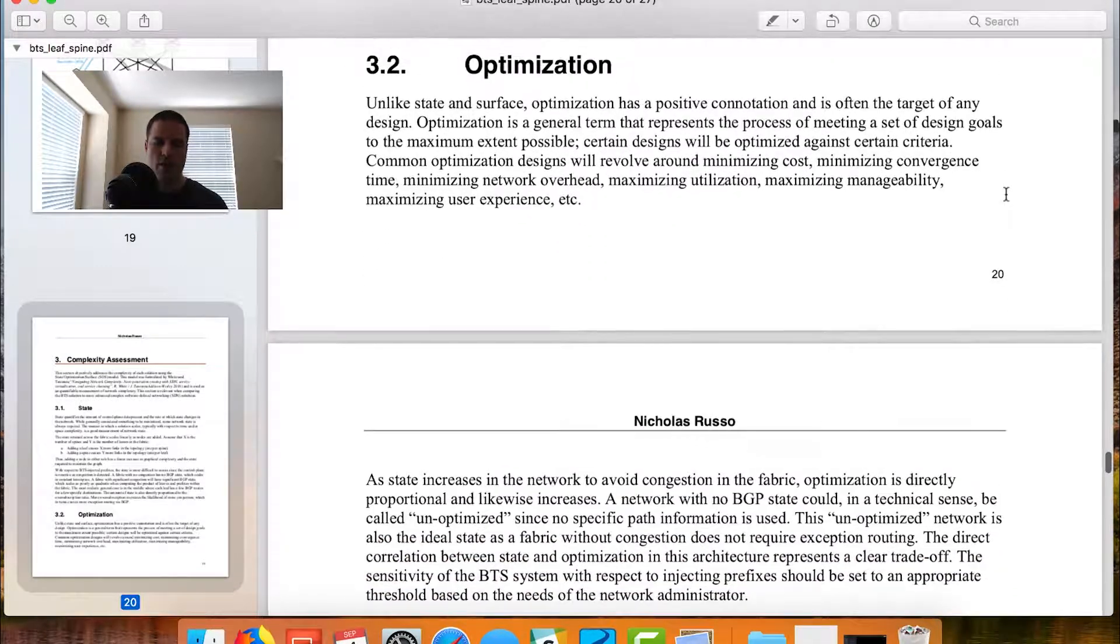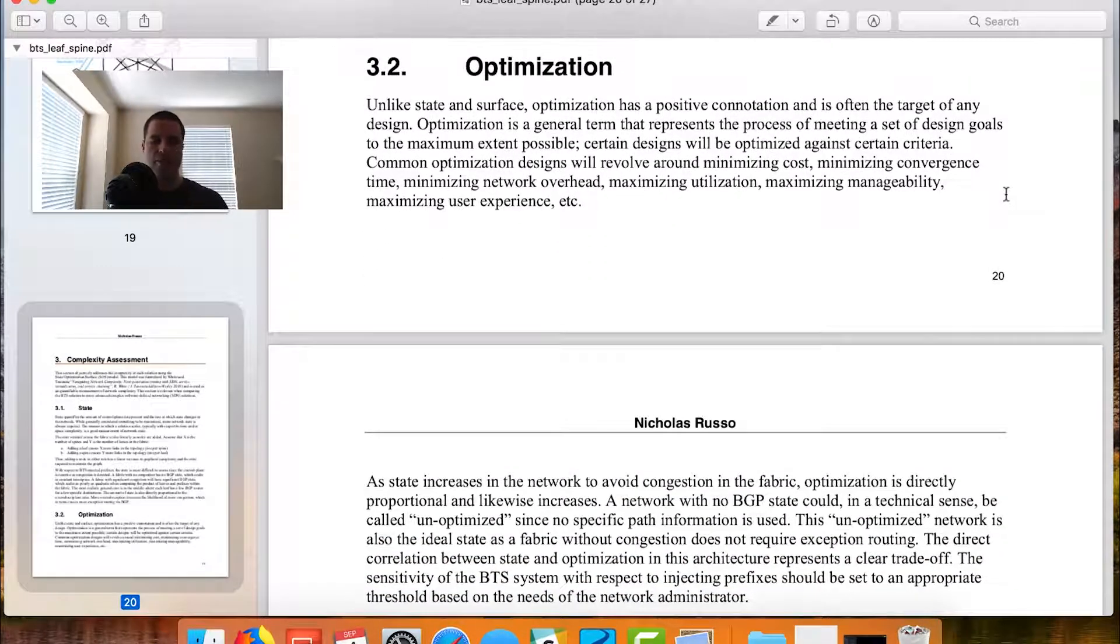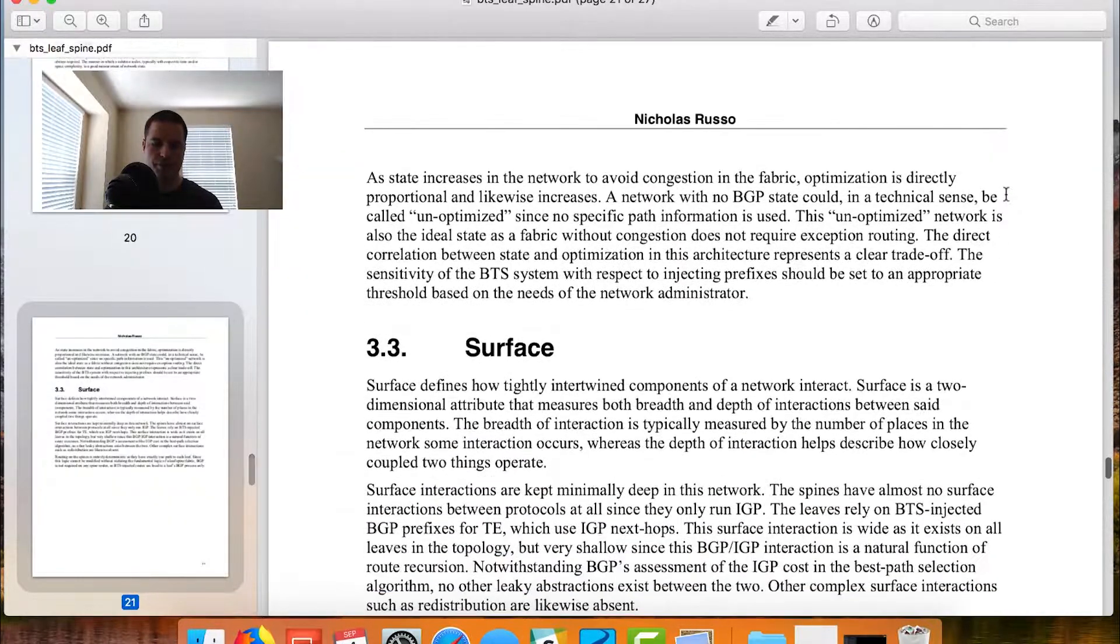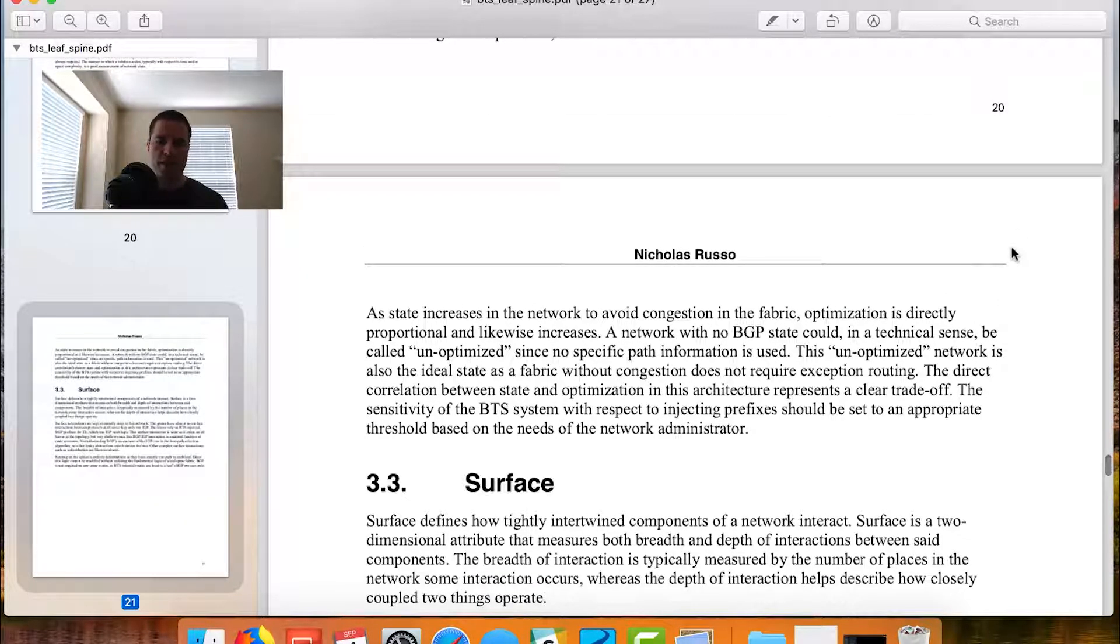Let's look at optimization. When I wrote this initially, I kept optimization in a positive context, just because it was a little bit easier to understand. So, I mentioned here that optimization has a positive connotation. It's the target of many designs. I think we all understand what optimization means within the context of the model. In this particular environment, we're very focused on optimal routing paths. I hope that much is clear, based on what we've talked about so far. So, that is our optimization metric. I think this one is pretty straightforward. As we increase state in the network, optimization is directly proportional. That means they both increase at the same time.